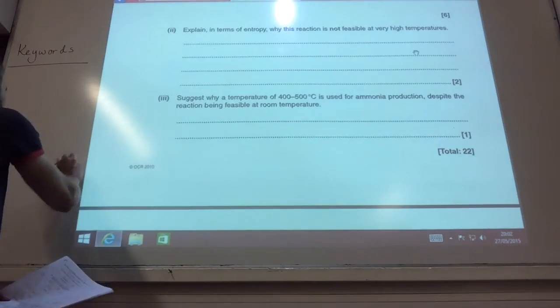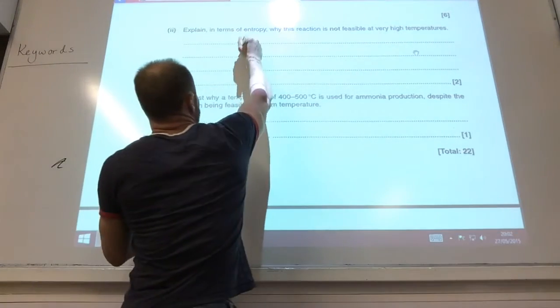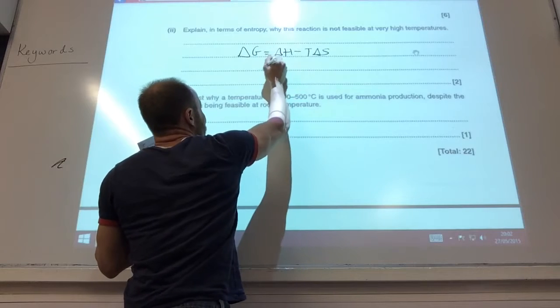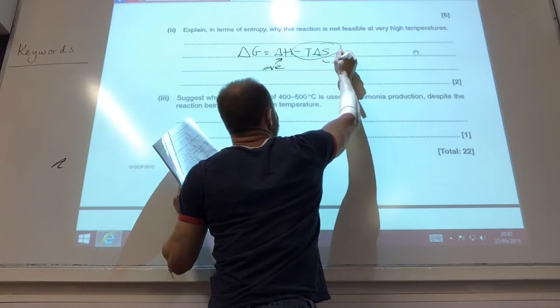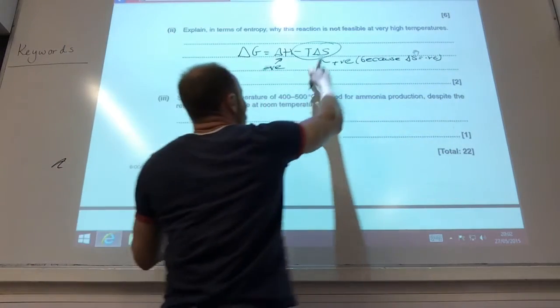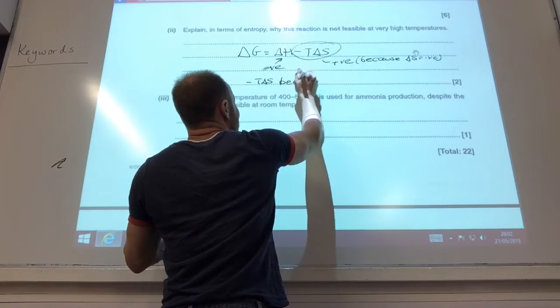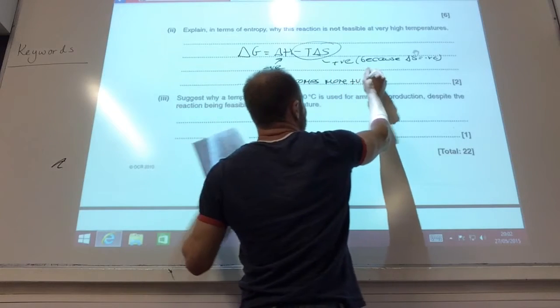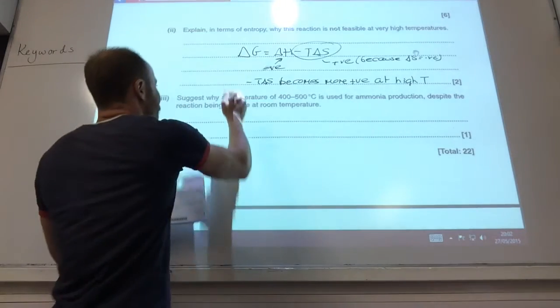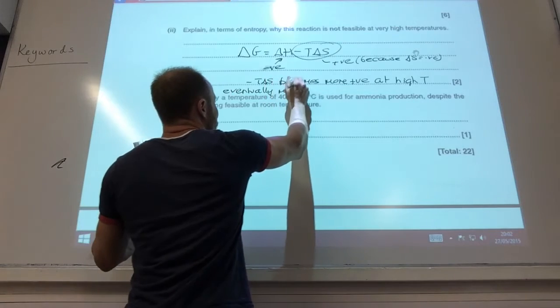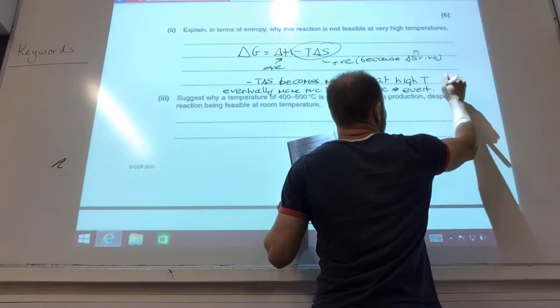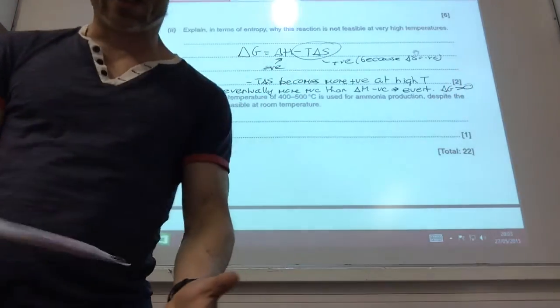Right, okay, so why is this reaction not feasible at high temperature? I would always go back to Gibbs free energy for this one. Delta H, we know, is negative. Minus T delta S is positive because delta S is negative. Therefore, this minus T delta S becomes more positive at high temperature. Obviously, this term is going to get bigger as temperature gets bigger. So eventually, more positive than delta H is negative. And therefore, eventually, delta G becomes greater than zero and it's no longer feasible.